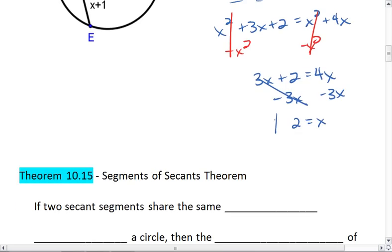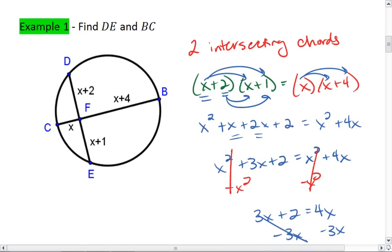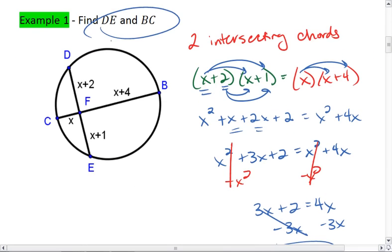but that's not what the question was looking for. I wanted to find DE and BC. If I plug 2 for X in, I get DF is 4, FE is 3, CF is 2, and FB is 6. Meaning DE is 4 plus 3, which is 7. And CB is 2 plus 6, which is 8. Those are my final answers.